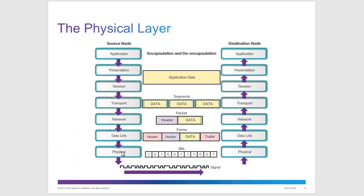The purpose of the physical layer: looking at the OSI model, from application down through presentation, data is encapsulated and de-encapsulated. At the physical layer, we take our data link frame and turn it into bits to send along our network media. The physical layer turns that frame into bits and sends it along whatever media we have in use.